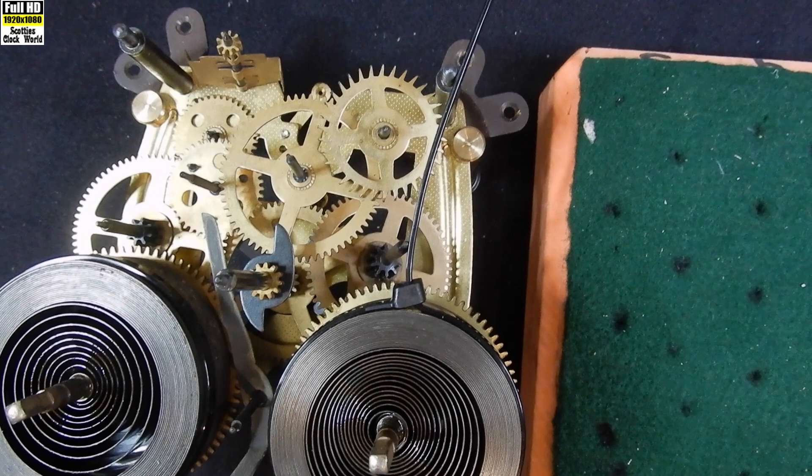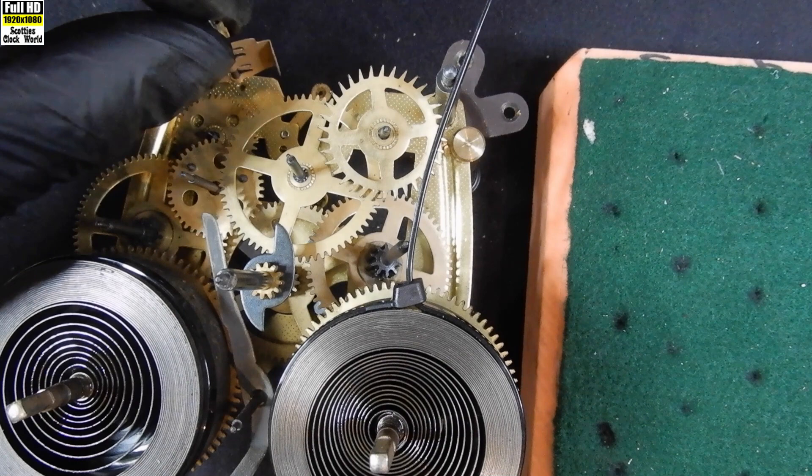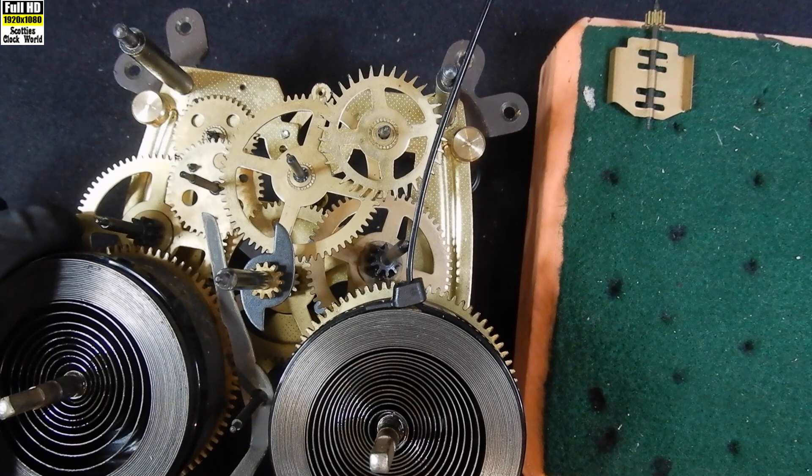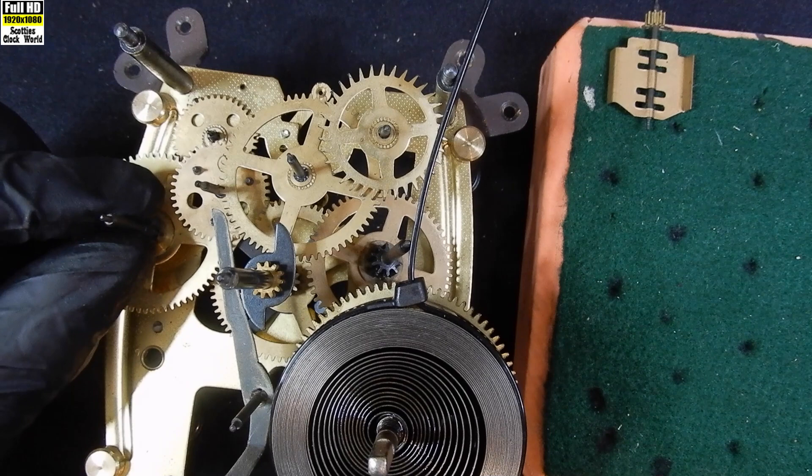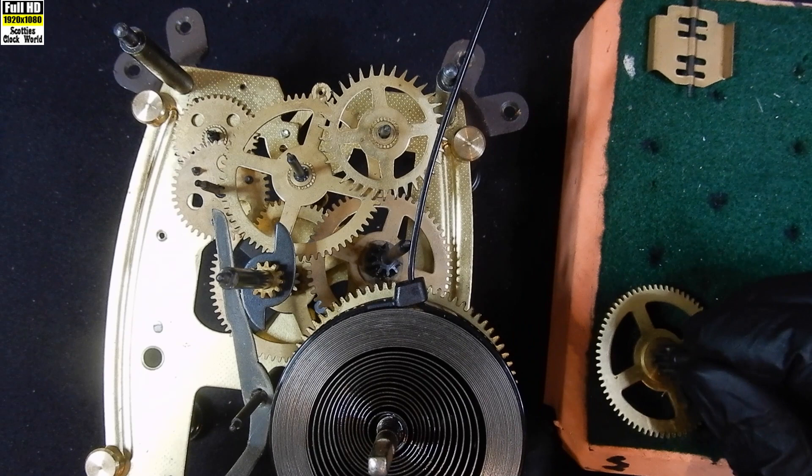Start off with the strike side, put the fly at the top. We'll take the mainspring out. That one's easy because we undid the circlip at the back. That's the first wheel on the strike side, we'll put him there.